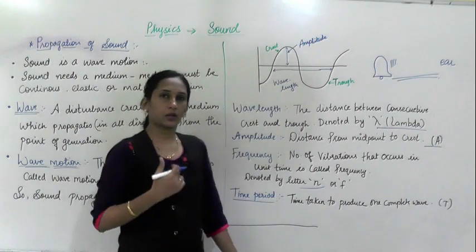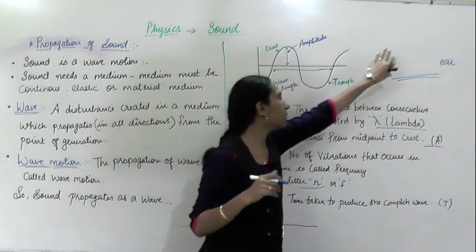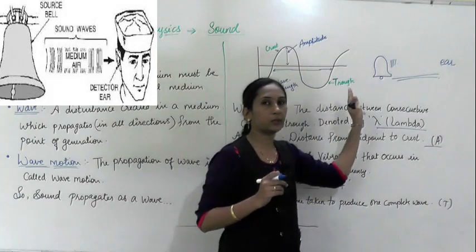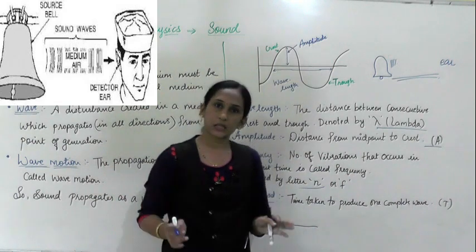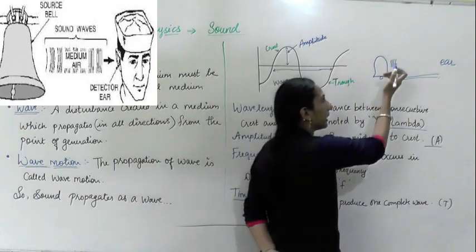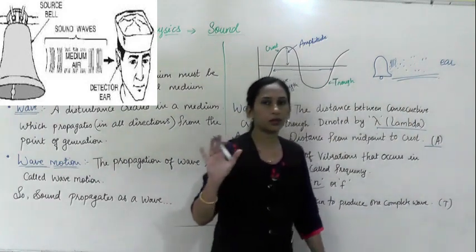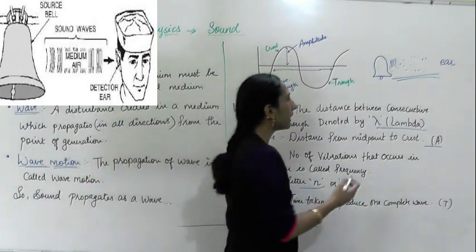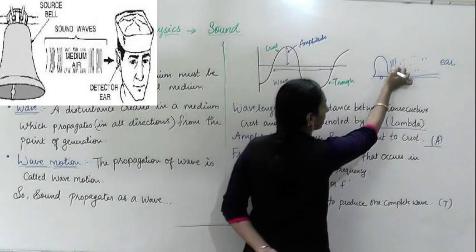When the bell is ringing, the gong hits the metal outer part and vibrations are produced. These vibrations are passed into the air medium. Air particles are present everywhere in our surroundings. When vibrations are produced in the bell, it passes those vibrations to nearby air molecules. Suppose here are air molecules present in our surroundings.